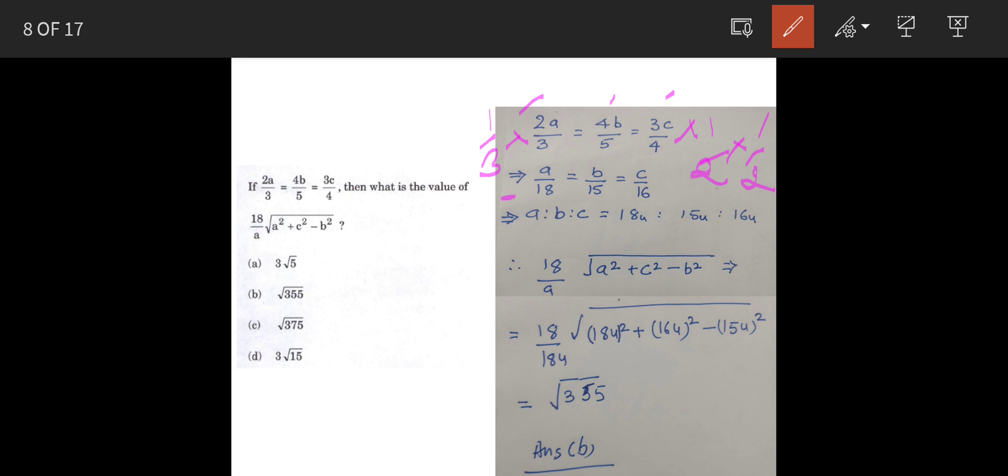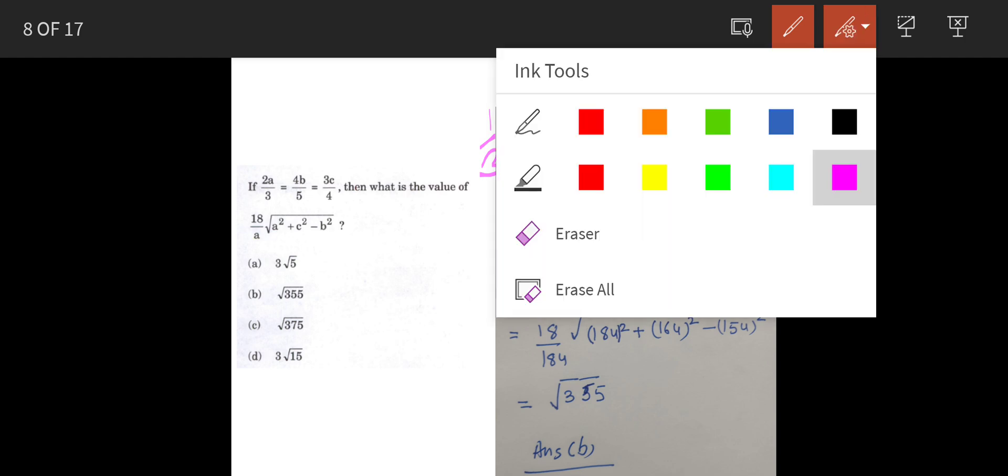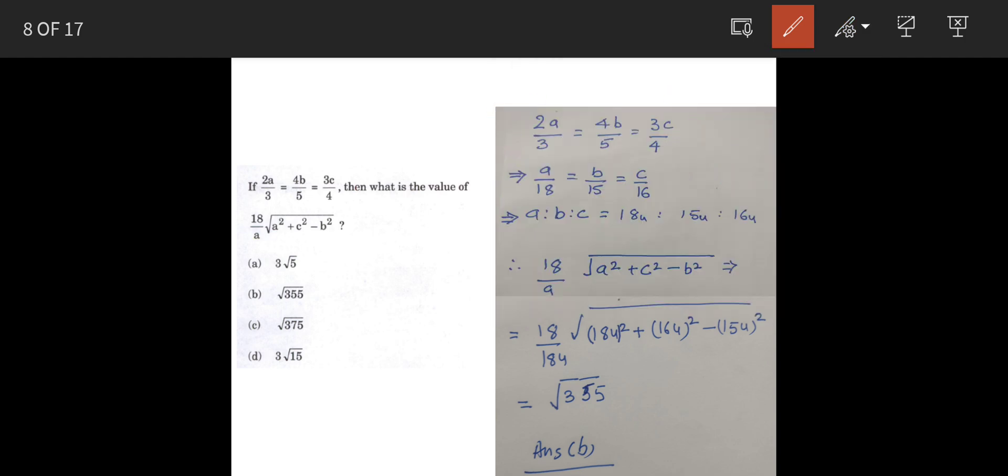So, we can write this as a is to b is to c is equal to 18u, 15u and 16u. Now, why u? Because in the proportions, when we worked out these values, so they represent actually one unit.